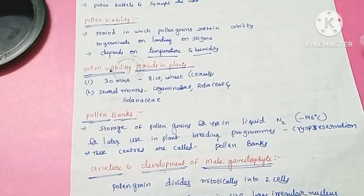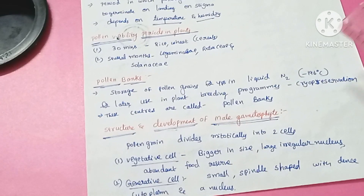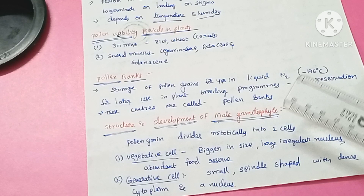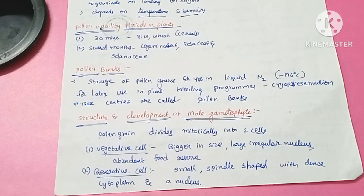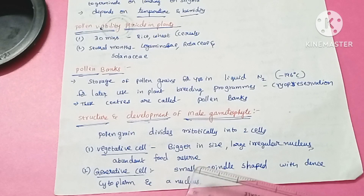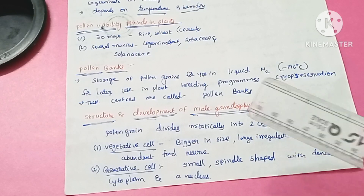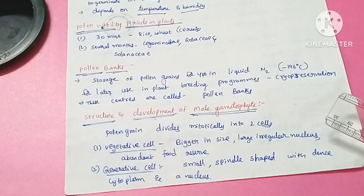Next is the structure and development of the male gametophyte. Pollen grains divide mitotically into two cells: one is the vegetative cell and the other is the generative cell. The vegetative cell has a bigger size and an irregular nucleus, with a large amount of food reserves. The generative cell is very small with a spindle shape and dense cytoplasm containing a nucleus.